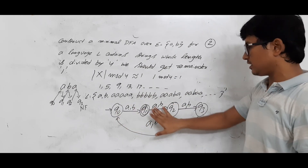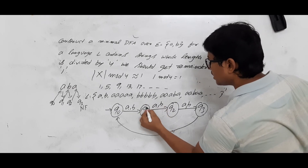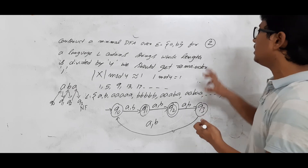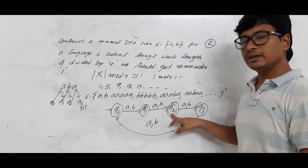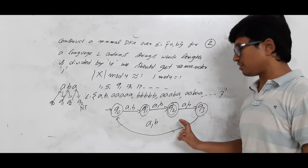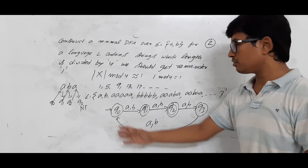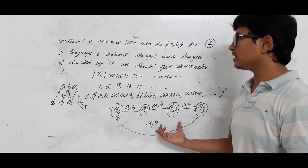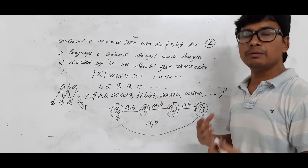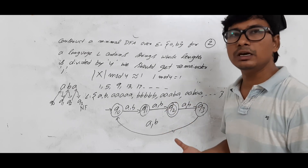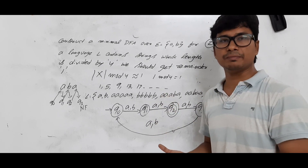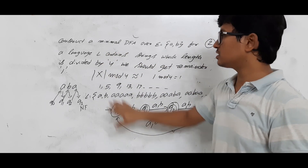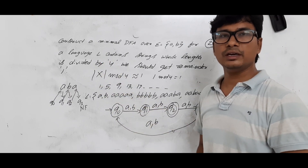So the variations are: if remainder is one, q1 is the final state; if remainder is two, q2 is the final state; if remainder is three, q3 is the final state; if remainder is zero, q0 is the final state. In GATE exams they usually don't ask you to construct the DFA — they ask for the minimum number of states. If they ask for the minimum number of states, you construct the minimal DFA and count its states. I hope you've understood the questions related to remainders 0, 1, 2, and so on. Thank you.